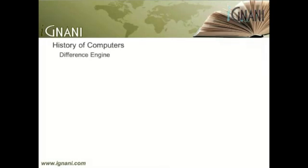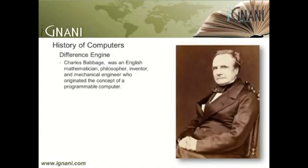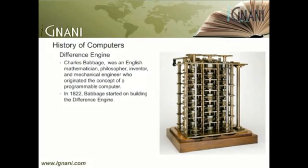Difference Engine: Charles Babbage was an English mathematician, philosopher, inventor, and mechanical engineer who originated the concept of a programmable computer. By 1822, he was proposing a steam-driven calculating machine the size of a room, which he called the Difference Engine, which would be able to compute tables of numbers such as logarithm tables. He obtained government funding for this project due to the importance of numeric tables in ocean navigation. The British government was publishing a seven-volume set of navigation tables which came with a companion volume of corrections showing over 1,000 numerical errors. It was hoped that Babbage's machine could eliminate errors in these types of tables.